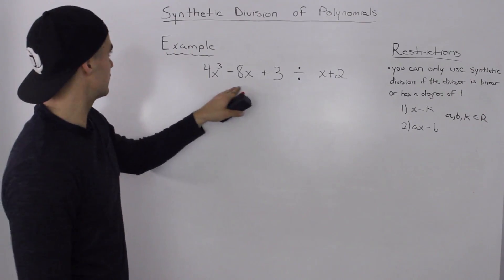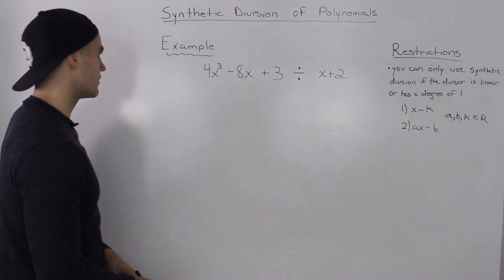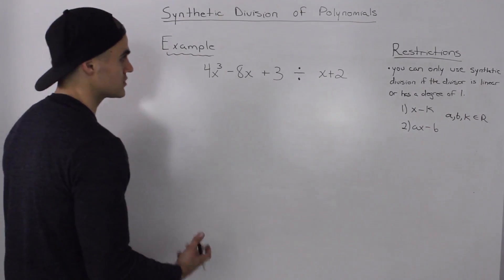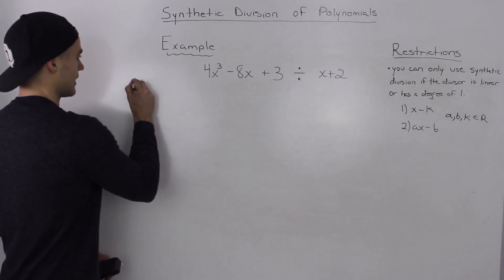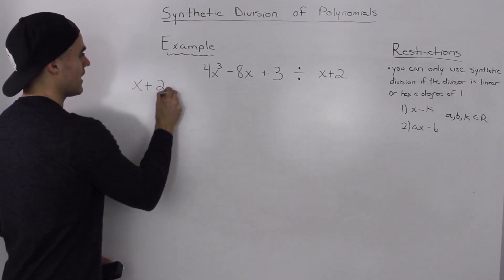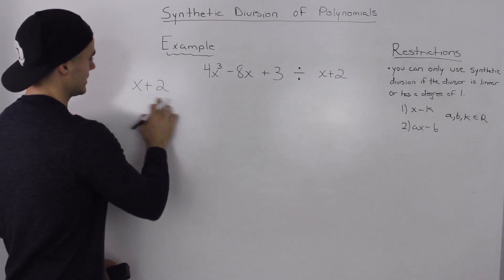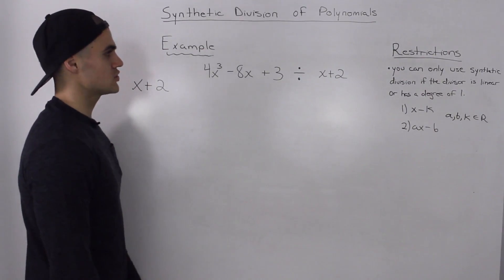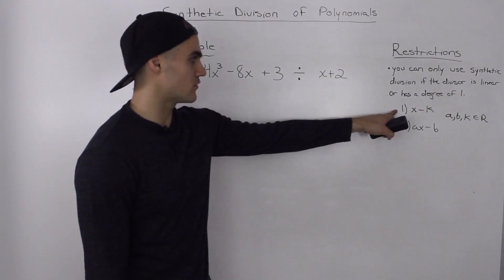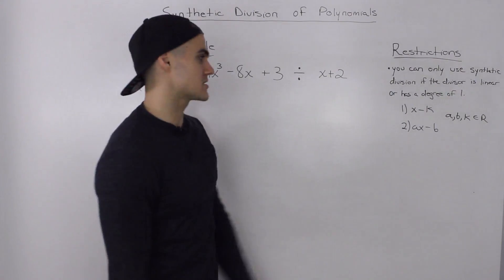So let's do synthetic division on this problem. The first thing you always check with synthetic division is, is the divisor linear? And it is linear. x plus 2 is a line, has a degree of 1. Next thing we check is, does it take the form of x minus k or ax minus b?